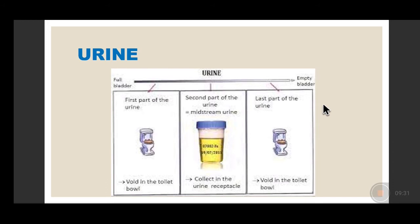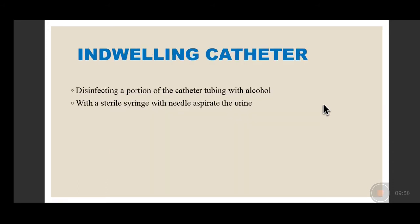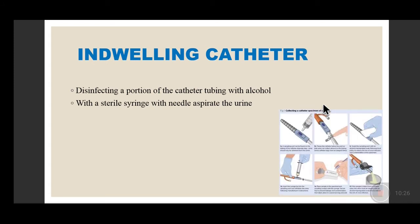To summarize the urine collection: timing is the first morning specimen, second part collected, first and third parts voided in toilet. Urine can also be collected from an indwelling catheter — though this is not preferred. If the patient is already catheterized, clamp the upper portion of the port, disinfect the portion of the catheter from which you withdraw urine, aspirate with a syringe, and clamp it back.